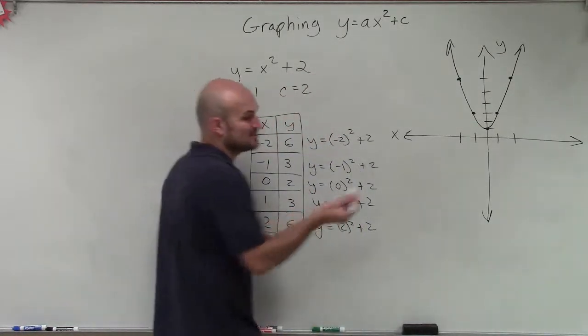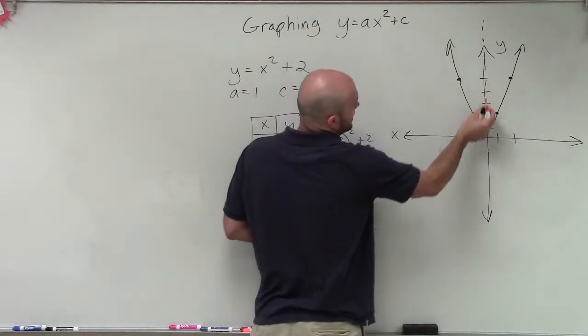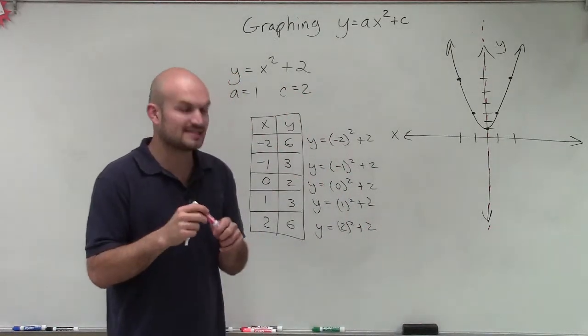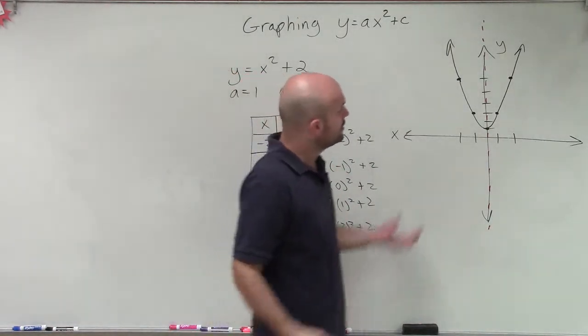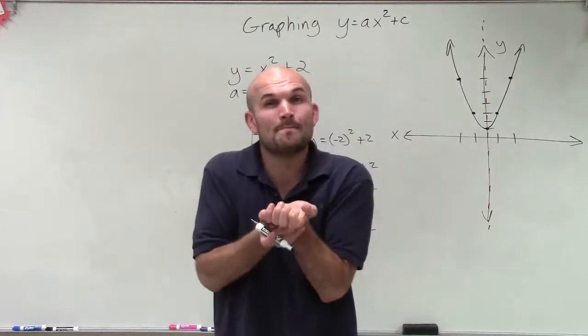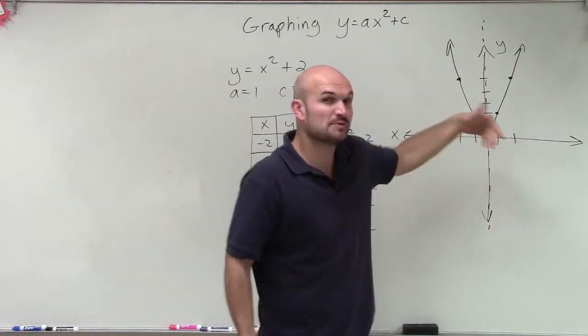But you can see that that is going to be the dotted line that a graph is symmetrical about. So my graph continues infinitely into the positive direction, but it has a lower minimum point right there, which we call our vertex.